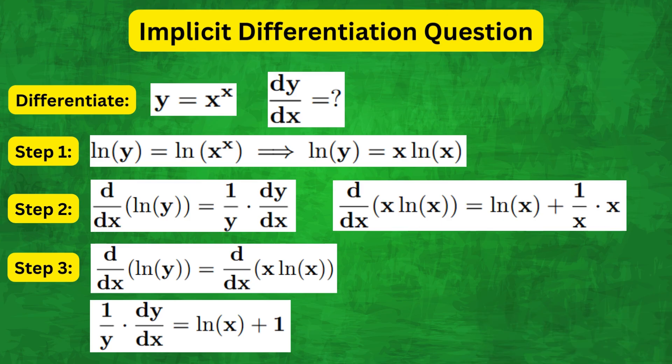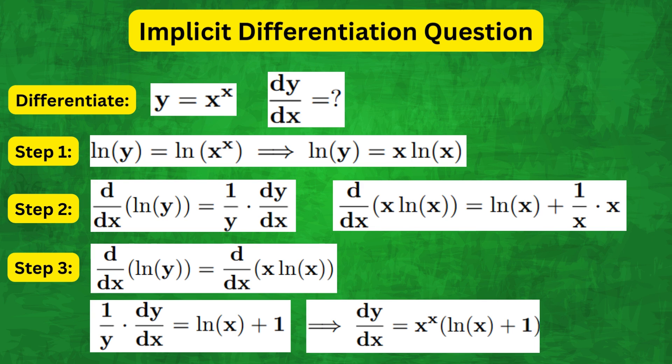Now moving the y to the right hand side and replacing it with x to the power of x, we get dy by dx equals x to the x open brackets natural log of x plus one, which is of course the answer.